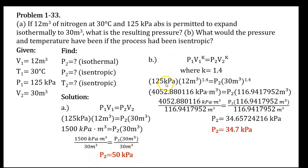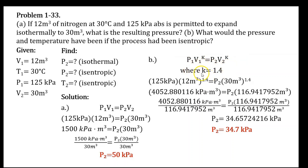Now let's find the final pressure in the isentropic process. For an isentropic process, the entropy of the system remains constant. We can use the equation P1V1 raised to K equals P2V2 raised to K, where K is the isentropic exponent of nitrogen, which is 1.4.